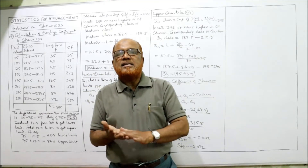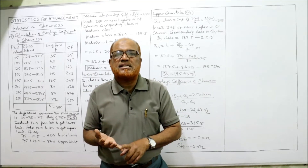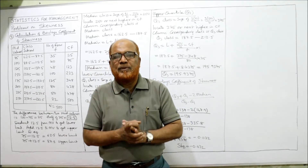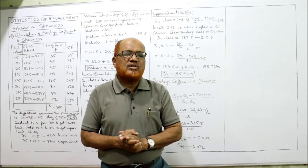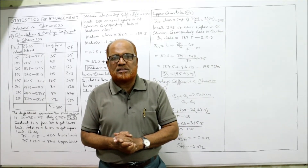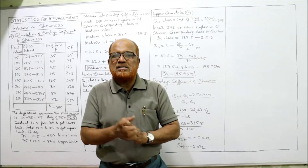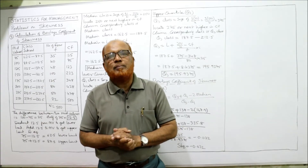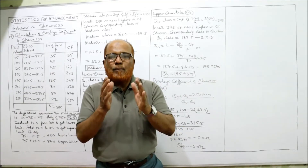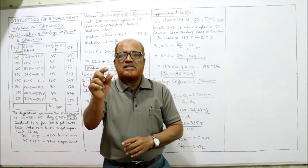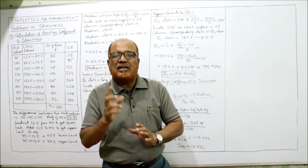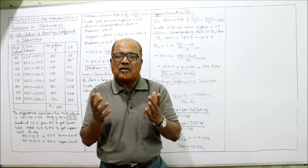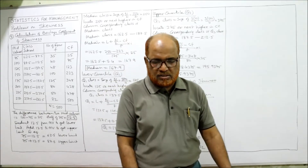Two methods are available: Carl Pearson's coefficient of skewness (SKP) and Bowley's coefficient of skewness (SKB), also known as quartile-based skewness. Carl Pearson's formula is: mean minus mode divided by standard deviation. Bowley's formula is: (Q3 + Q1 − 2·Median) / (Q3 − Q1).